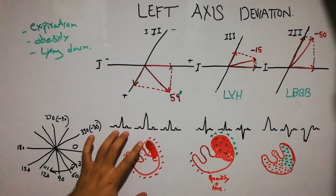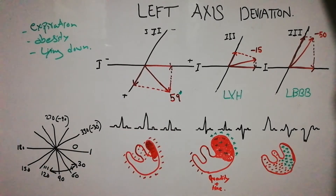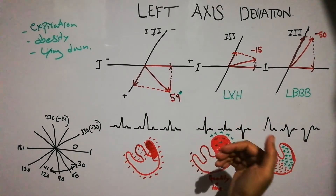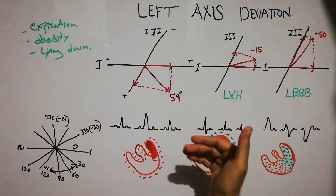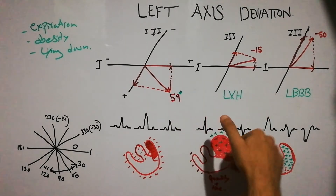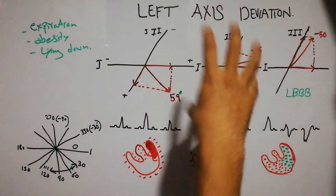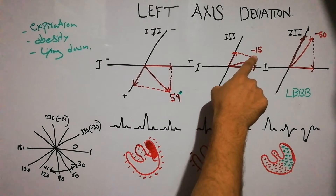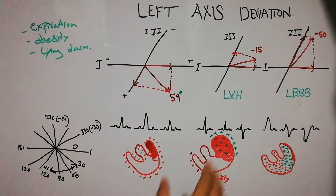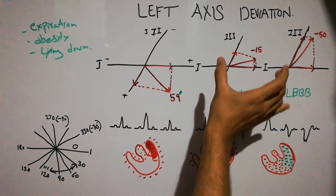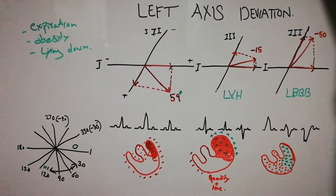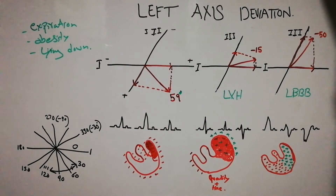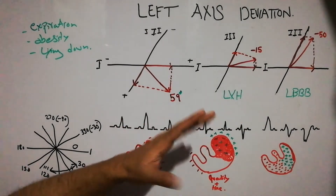Normally on the ECG strip, lead 1, lead 2, and lead 3 look a certain way, but in left ventricular hypertrophy, lead 3 is clearly directed downward — its direction has changed, showing a shift toward the left. On vector analysis, the normal vector of 59 degrees has shifted toward the left to approximately minus 15 degrees, because plotting the axes of lead 1 and lead 3 gives figures shifted toward the left side.